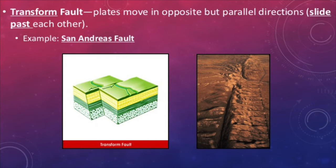The last type of boundary we have are transform boundaries. Here, we don't see convergence or divergence, but the plates slide past one another. This creates a lot of shearing stress, so earthquakes are very prevalent in these locations. The best example we have of a transform fault is the San Andreas Fault that splits through California.